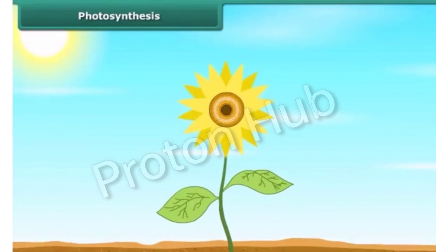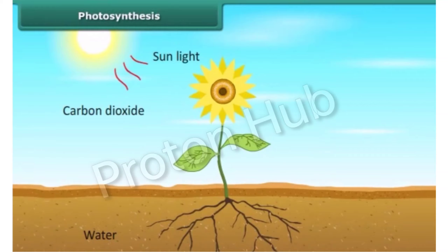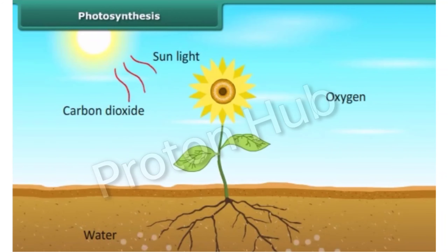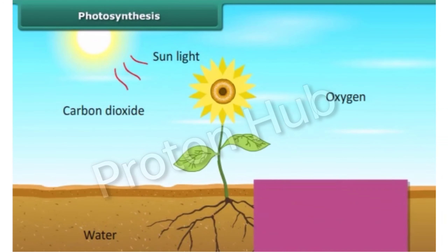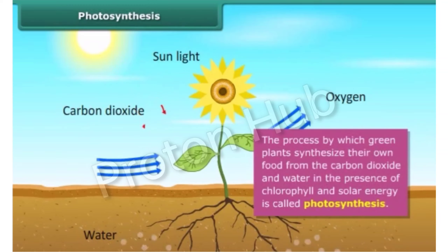As we know that green plants synthesize their own food. But do you know how they synthesize their own food? Actually, green plants make their own food by the process of photosynthesis. Photosynthesis is a process by which green plants synthesize their own food from carbon dioxide and water, in the presence of chlorophyll and solar energy.